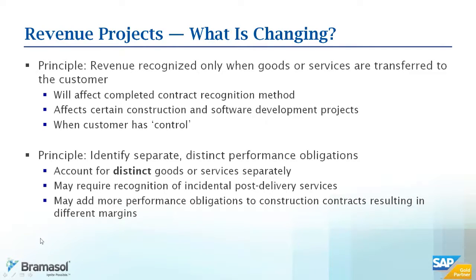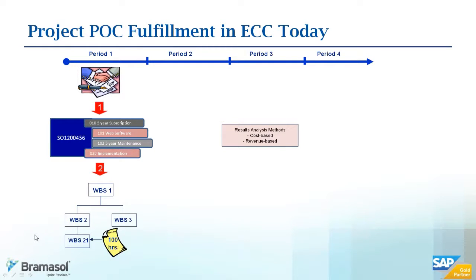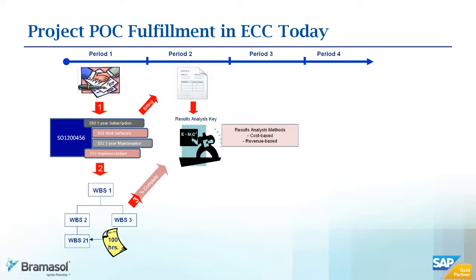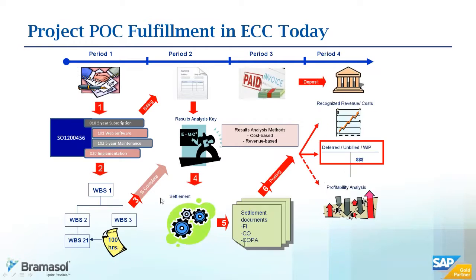Let's talk about what we see out there in terms of how it operates today. The percentage of completion and fulfillment in ECC operates something like this: you have your project with your WBS structures, and you run results analysis and do the further steps in there. In the second period, you have your results analysis key set up and look at the percentage of completion. From there, we look at invoicing and billing, handling the settlement process, and it goes to deferred or unbilled depending on how we've set up our accounts.